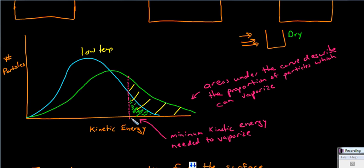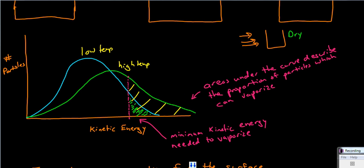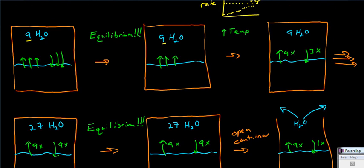There is a small proportion of all particles that are able to vaporize — they have that minimum kinetic energy. But at a higher temperature, this shifts the kinetic energy curve to the right: more particles have higher kinetic energy. The fraction of all particles highlighted in yellow that will have that minimum kinetic energy is higher. So by increasing the temperature, we increase the rate of vaporization — going from three vaporizations to nine.